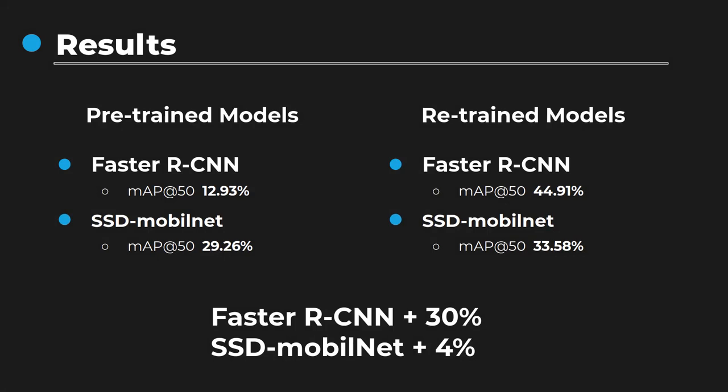To test our architecture with the autonomously gathered dataset, we created a test set with 5 new instances for each object present in the training set, with a different background. We computed the mean average precision with an intersection over union of 50% for both models before and after retraining. We achieved an improvement of 30% with the Faster RCNN network and only 4% with the SSD model. The poor increase in accuracy with SSD can be explained by the fact that we did not fine-tune the hyperparameters — for example, carefully choosing the set of anchors is a crucial parameter for SSD architecture and could have improved accuracy.